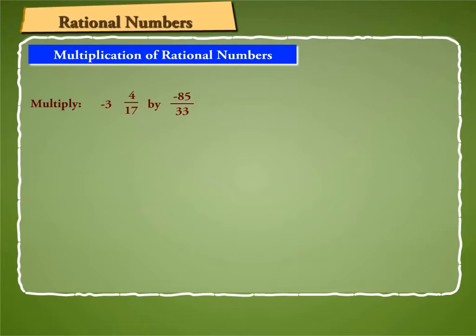First, we express minus 3, 4 by 17 as minus 55 by 17. Now multiply minus 55 by 17 by minus 85 by 33.